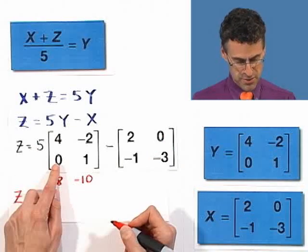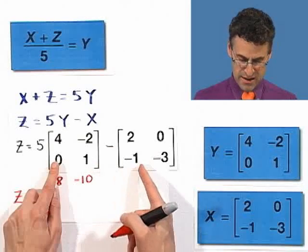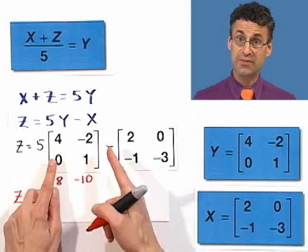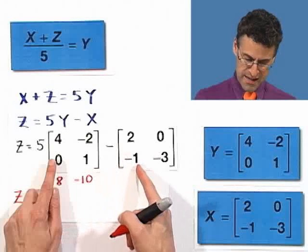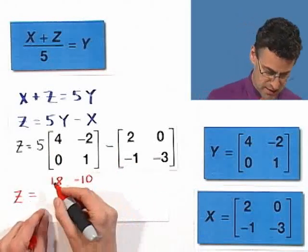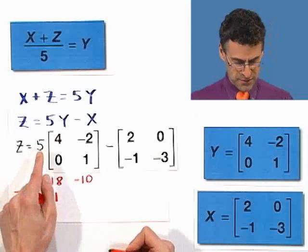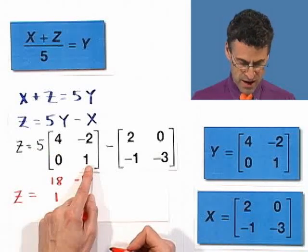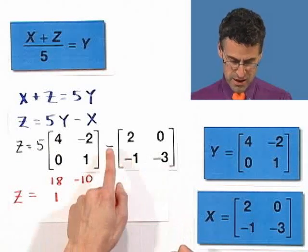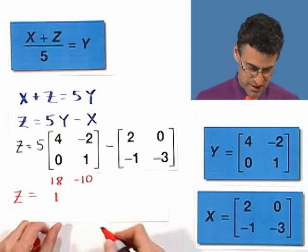Here I see a 5 times 0, which is 0, minus a negative 1. You have to be careful now. That negative has to distribute everywhere. So minus a negative 1 is actually plus 1. So I just get 0 plus 1, which is 1. And finally, 5 times 1, which is 5, minus negative 3. That's plus 3. 5 plus 3 is 8.